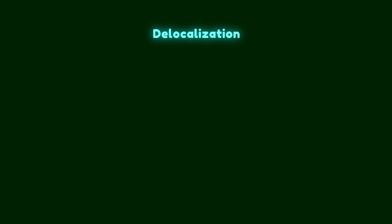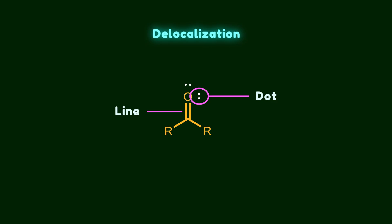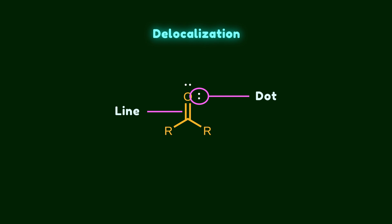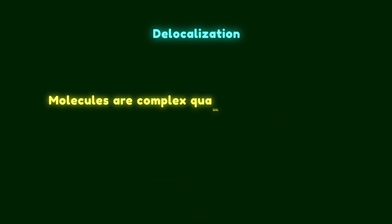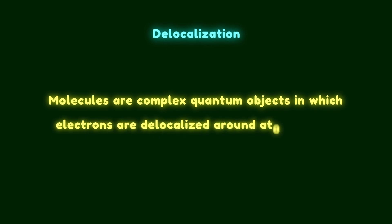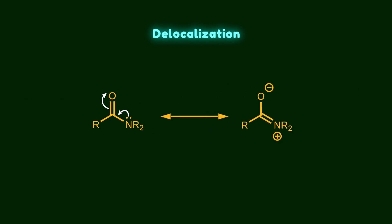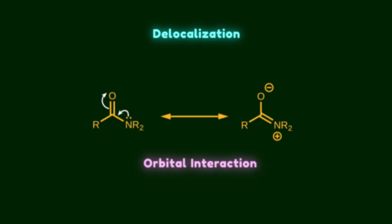Usually we represent molecules using Lewis structures — bonds as lines and valence electrons as dots. But molecules are nothing like the lines and dots we draw on paper, and this representation is not fully satisfying. Molecules are complex quantum objects in which electrons are delocalized around atomic nuclei. We often describe this delocalization using resonance forms. However, to gain a more precise perspective, we need to look at delocalization through the lens of orbital interactions.